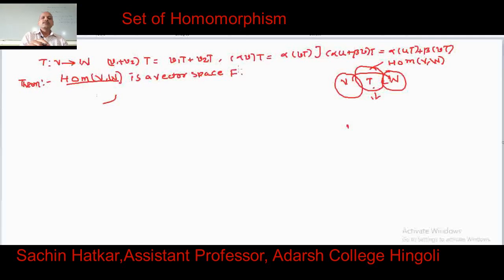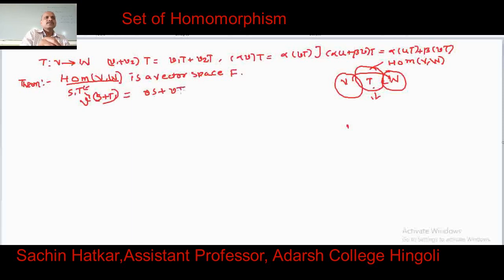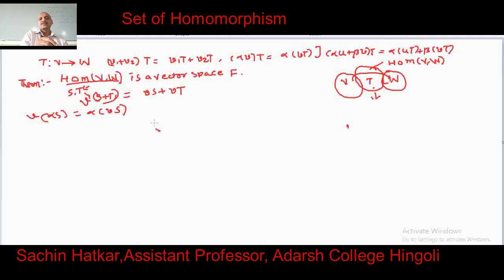To prove this, we require addition and scalar multiplication in the set of homomorphisms. We define addition as follows: suppose S and T are elements of the set of homomorphisms. We define (S + T)(V) = S(V) + T(V). Also, scalar multiplication is defined as (αS)(V) = α·S(V). This is the definition of scalar multiplication.